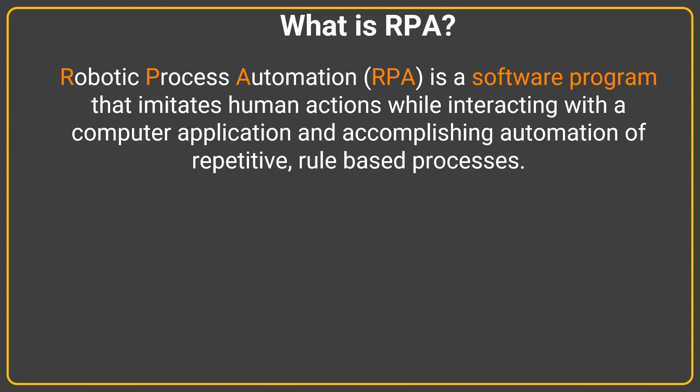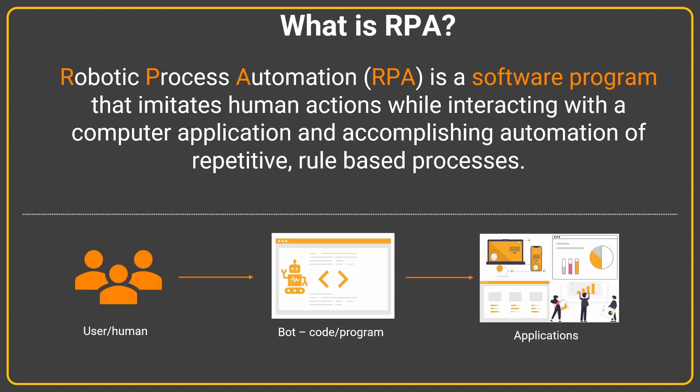These recorded actions are also known as a bot. In simple words, human actions which are performed on an application are recorded and orchestrated so that they can be applied back on an application in a more stable and harmonious way. In simple terms, RPA is a software program that imitates human actions while interacting with a computer application and accomplishing automation of repetitive, rule-based processes.